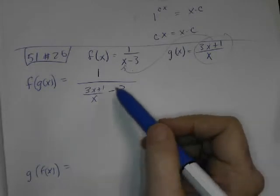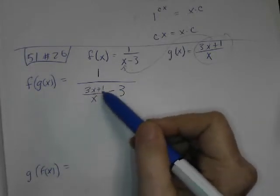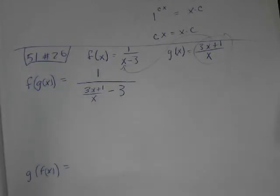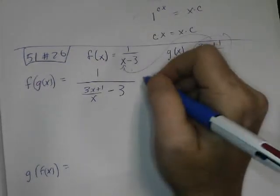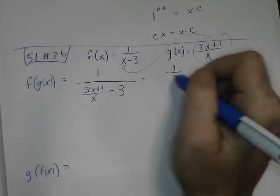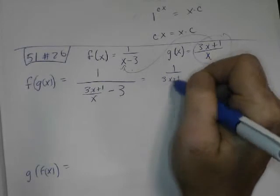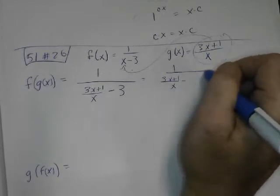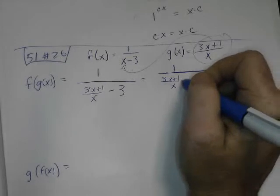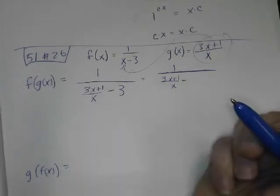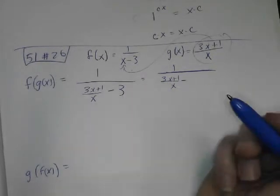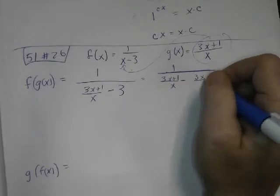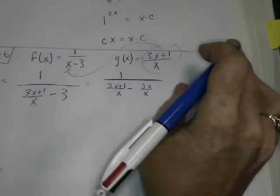Is that okay? I just plugged it in right there for the x. And then we got a complex fraction, so now we got 1 over 3x plus 1 over x minus, there's my big fraction bar. This thing I want to make a common denominator, so I'm going to call it 3x over x. So that I can have the common denominator.